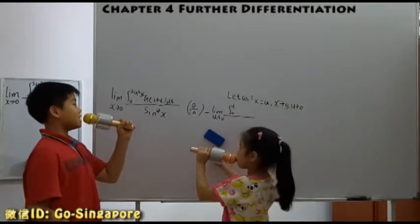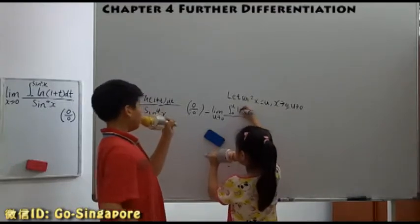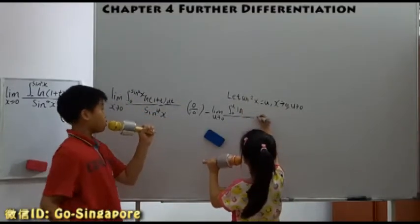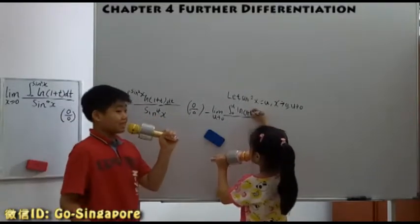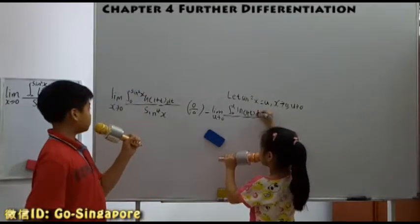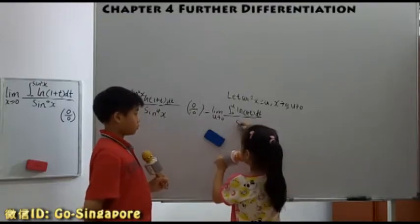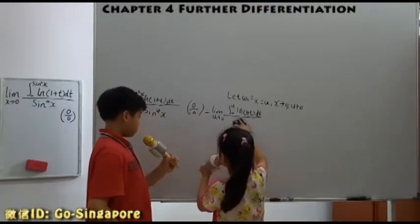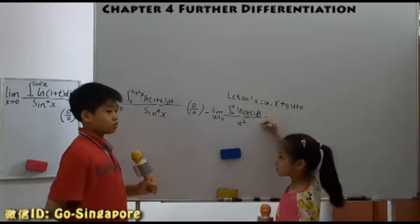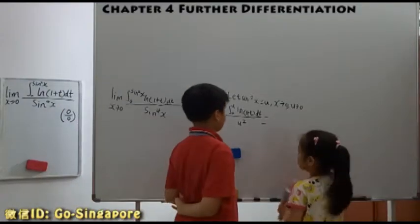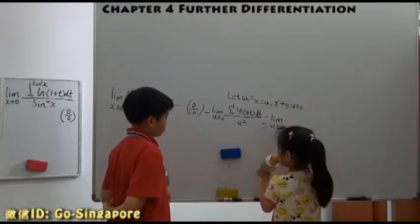X approaches to 0, u approaches to 0. Yes, correct. So that is also u. Yes. And so, that is integral 0 to u. So, this is long. Long. Right here, 1 plus t, 1 plus t, dt. Yes. So, the denominator will be a normal sine. So, it will be u squared. Yes.